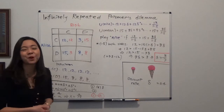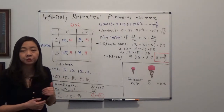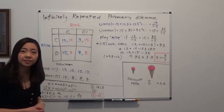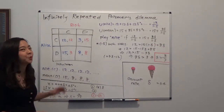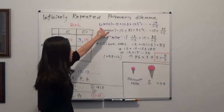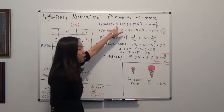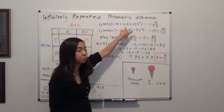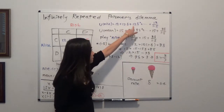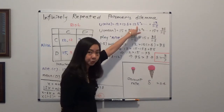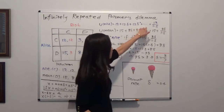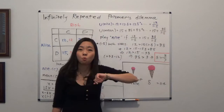Alice only cares about her self-interest, so she calculates: if the utility of playing nice is higher than the utility of playing mean, she will play nice. Alice's utility of playing nice is 12 this period, plus 12 times delta next period, plus 12 times delta squared the period after, and so on. The sum equals 12 divided by (1 minus delta).